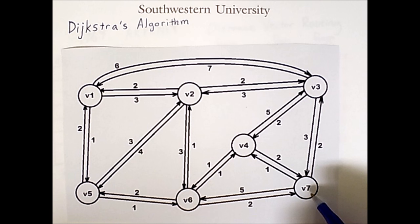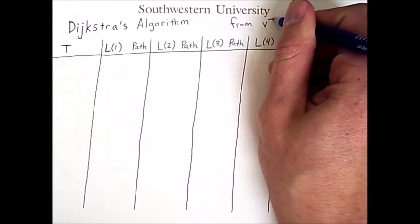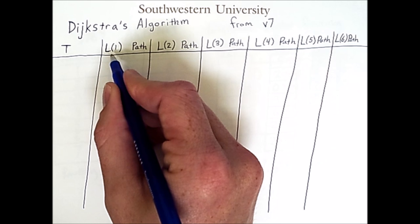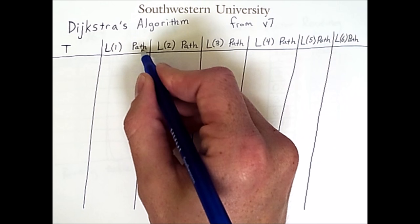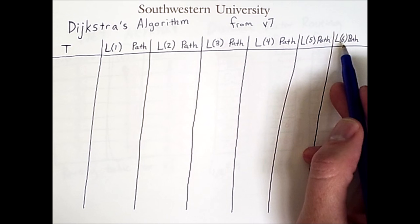You can visualize the steps of this algorithm by using a table like the following. T is a set of vertices which we have already checked. L1 is our current estimate of the length of the shortest path to vertex 1. Next to that, we will store what that path actually is. Notice that we have the lengths and paths to vertices 2, 3, 4, 5, and 6, but we exclude the length to vertex 7 because that is our starting point.